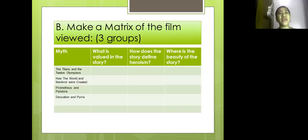I have here a matrix of the film viewed. It's like a comparative tabulation of how to compare the content of all these myths that you have watched. I have there the Titans and the Twelve Olympians, how the world and mankind were created, Prometheus and Pandora, and Deucalion and Pyrrha.